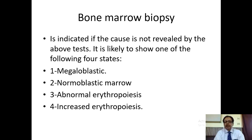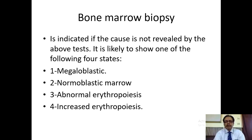Bone marrow biopsy is indicated if the cause is not revealed by the above tests. It is likely to show one of the following four states: megaloblastic, normoblastic, abnormal erythropoiesis and increased erythropoiesis. If any of these four options are reported by the pathologist, it is a confirmation that the patient is suffering from a malignant disorder.